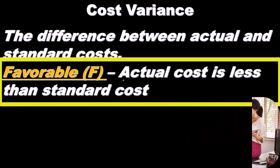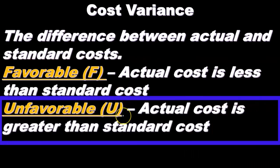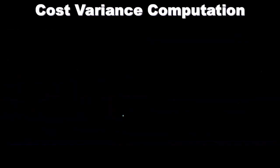A favorable difference is indicated with an F. An unfavorable difference, indicated with a large U, is where the actual cost is greater than the standard cost. So if the cost that actually happened is more than the cost that we thought should happen — the standard, what should happen under normal conditions — then we have an unfavorable difference.